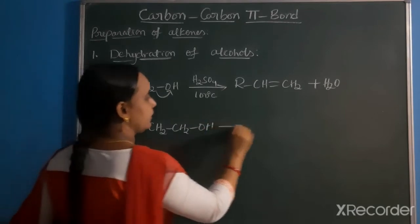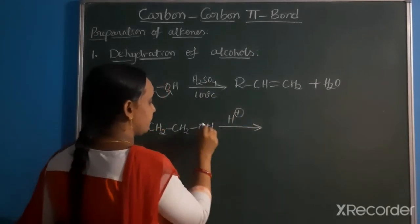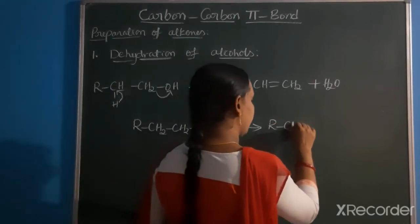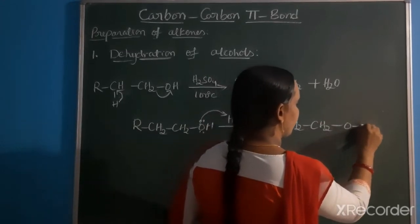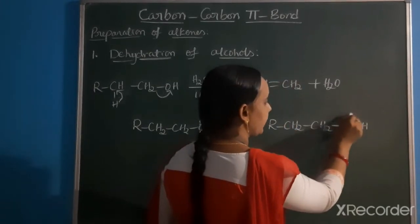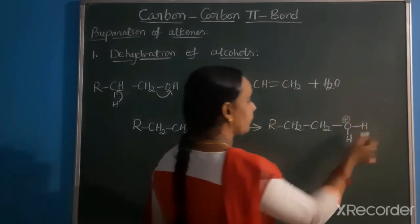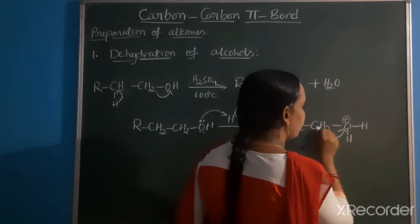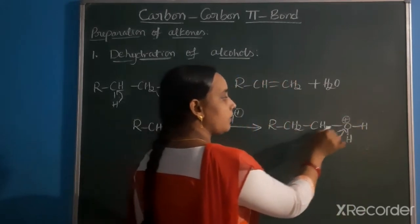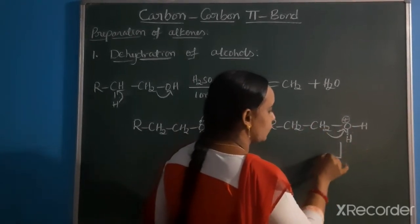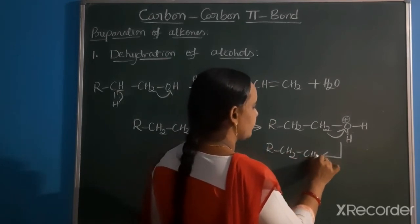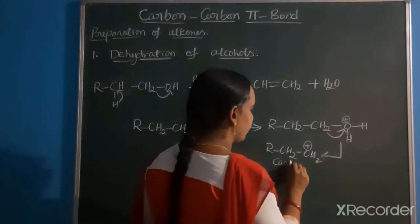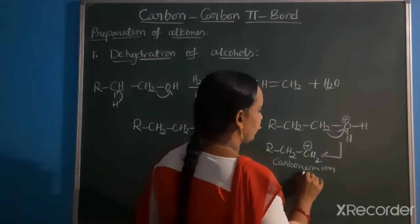CH2CH2OH reacts with H2SO4. H plus ion is formed from H2SO4. Oxygen uses a lone pair of electrons to form a bond. The carbon then carries a positive charge - R-CH2-CH2 positive charge. This positively charged carbon species, carbonium ion, is called a carbocation.